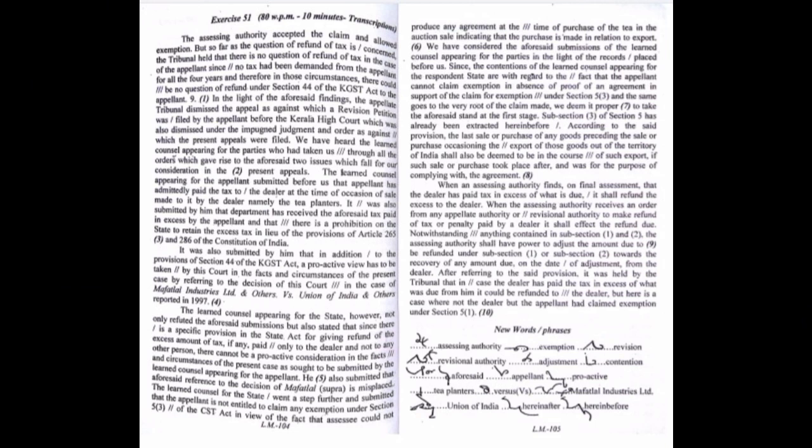The assessing authority accepted the claim and allowed exemption, but so far as the question of refund of tax is concerned, the tribunal held that there is no question of refund of tax in the case of the appellant since no tax had been demanded from the appellant for all the four years, and therefore in those circumstances, there could be no question of refund under section 44 of the KGST Act to the appellant.